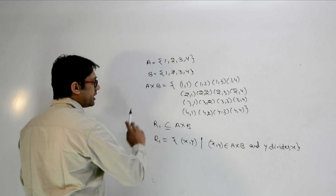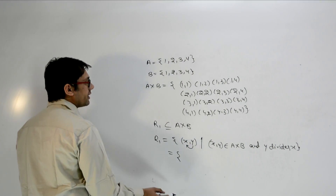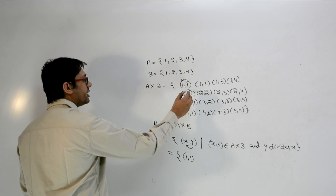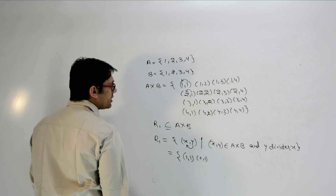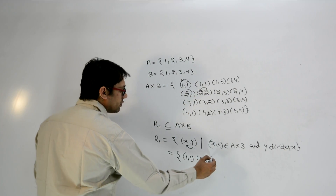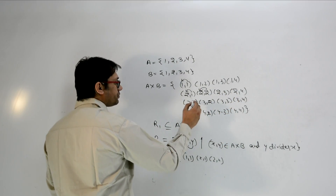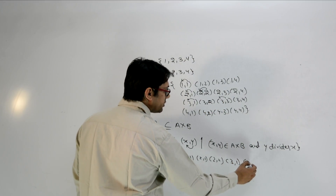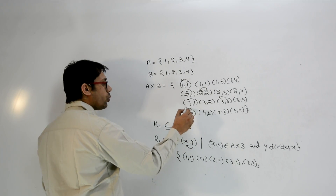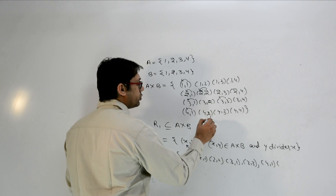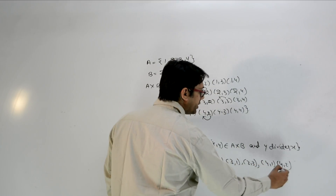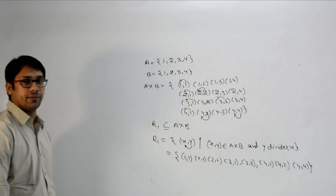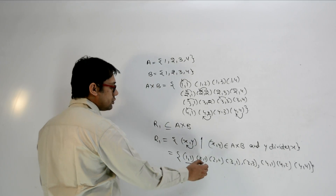So in this relation, we find the pairs from A×B where y divides x. For example, 1 divides 1, so (1,1) is in the relation. 1 divides 2, so (2,1) is in the relation. 2 divides 2, so (2,2) is in the relation. 1 divides 3, so (3,1) is in the relation. 3 divides 3, so (3,3) is in the relation. 1 divides 4, so (4,1) is in the relation. 2 divides 4, so (4,2) is in the relation. 4 divides 4, so (4,4) is in the relation.